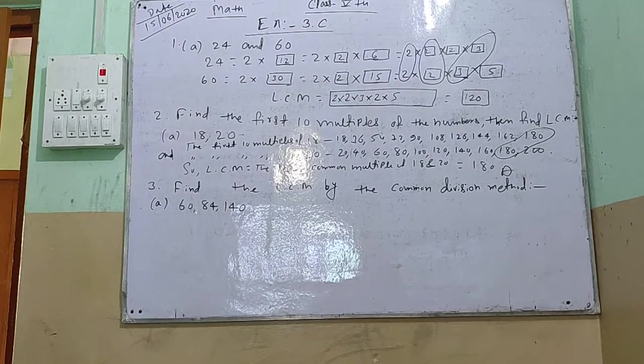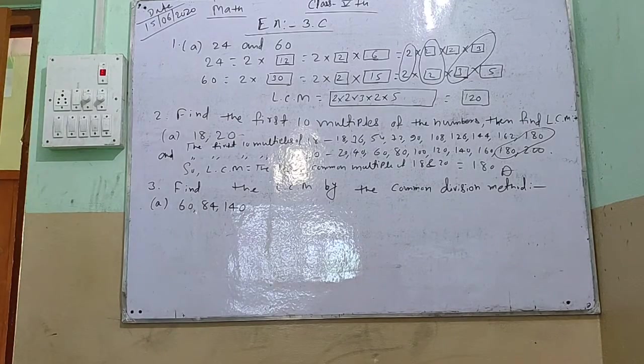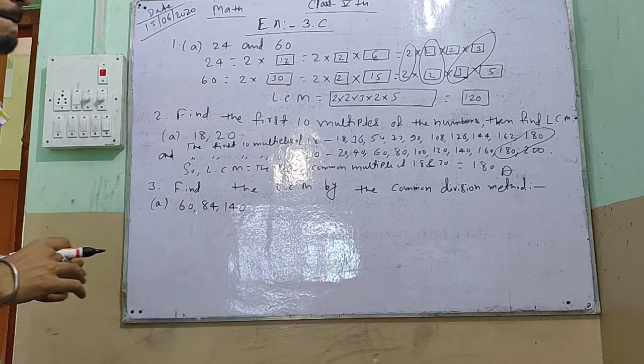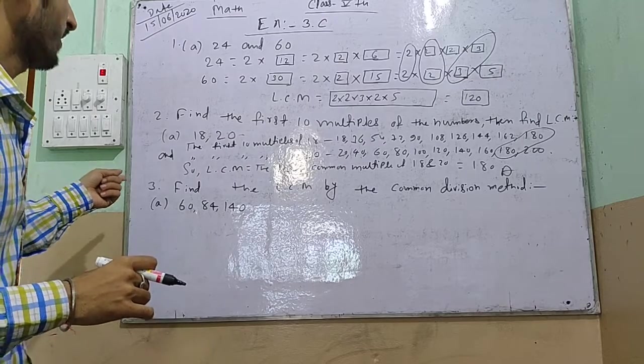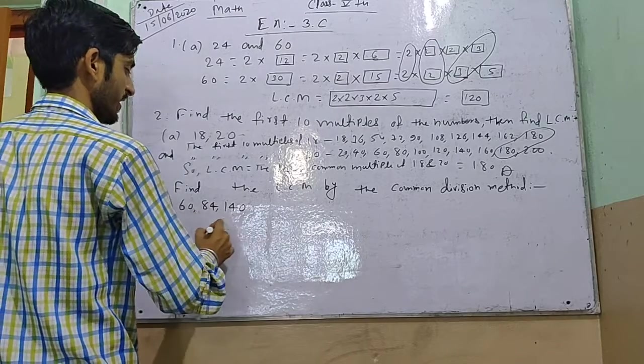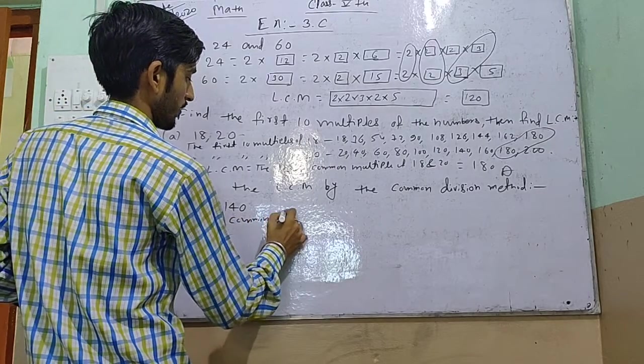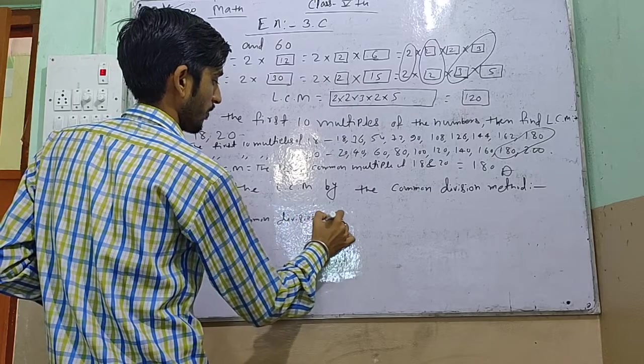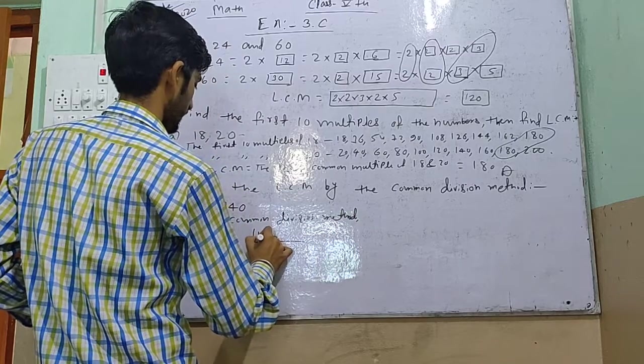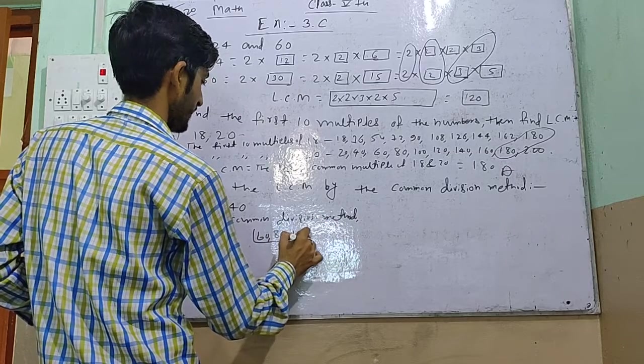We have a common method. I am going to show you a general pattern. I am going to show you a general pattern. 60, 80, 40. Now, I am going to start with the smallest prime number and divide by 2.